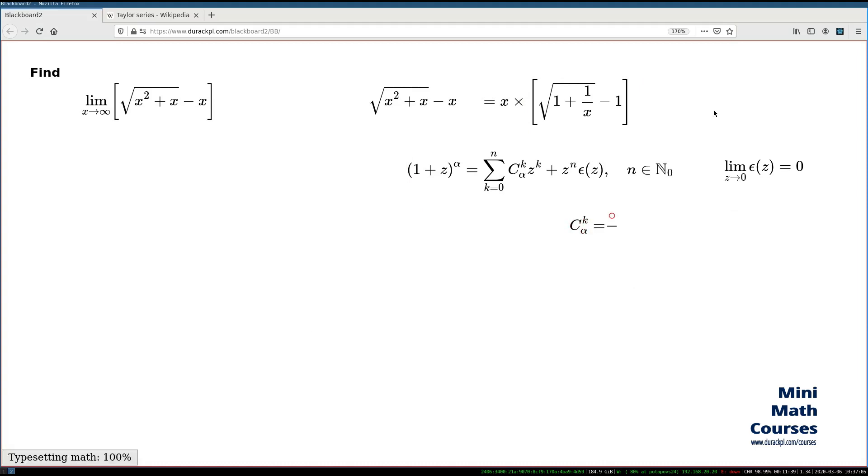let me first remind you what the binomial coefficient is. We multiply in the numerator k different factors. The first factor is α and the rest are the reduction of α by 1: α - 1, α - 2 and all the way to α - (k - 1), and in the denominator we just multiply all of the integers from 1 to k.